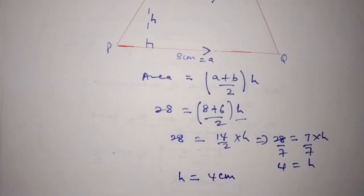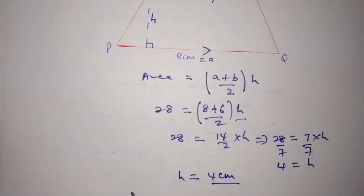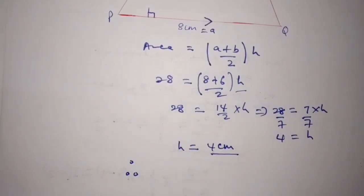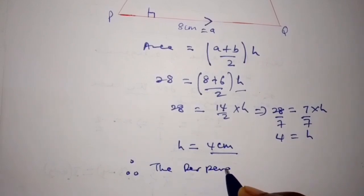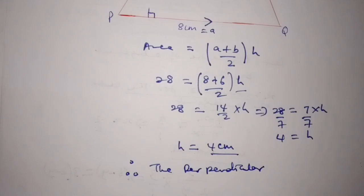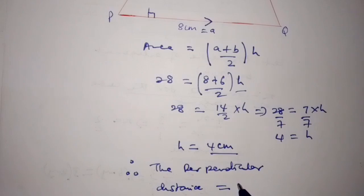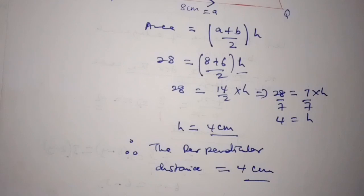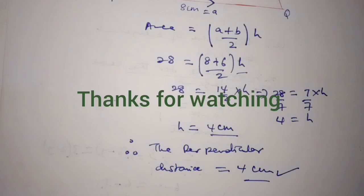Therefore, the perpendicular distance between PQ and SR, which we named H, is equal to 4 cm. This is our final answer.